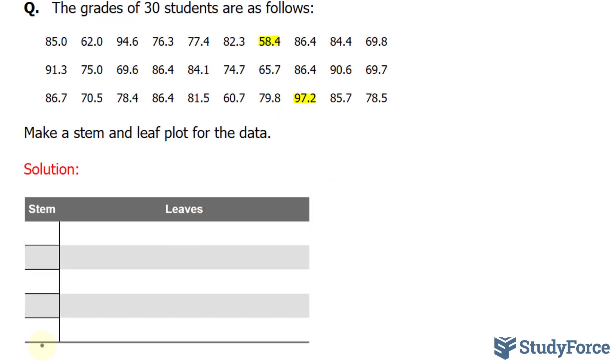For the stem portion of our plot, we'll write down the first digit of each of those numbers. So we'll have 5, 6, 7, 8, and 9.